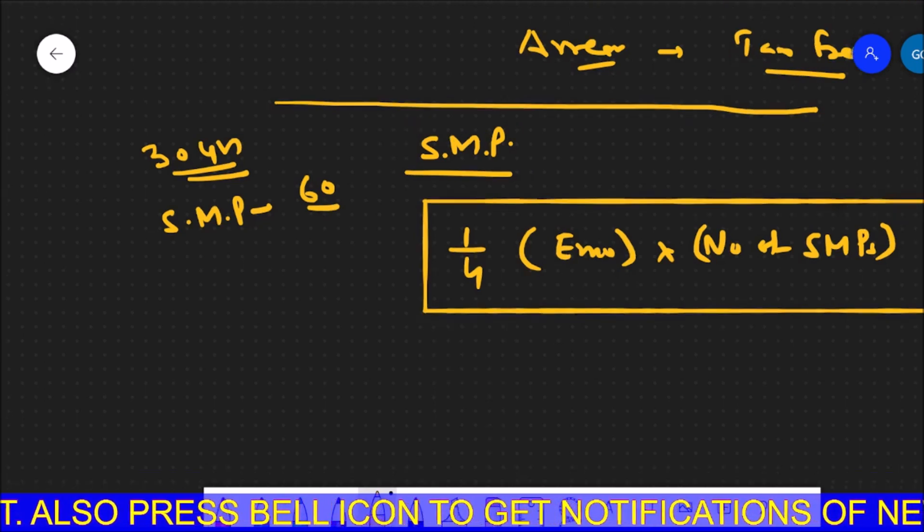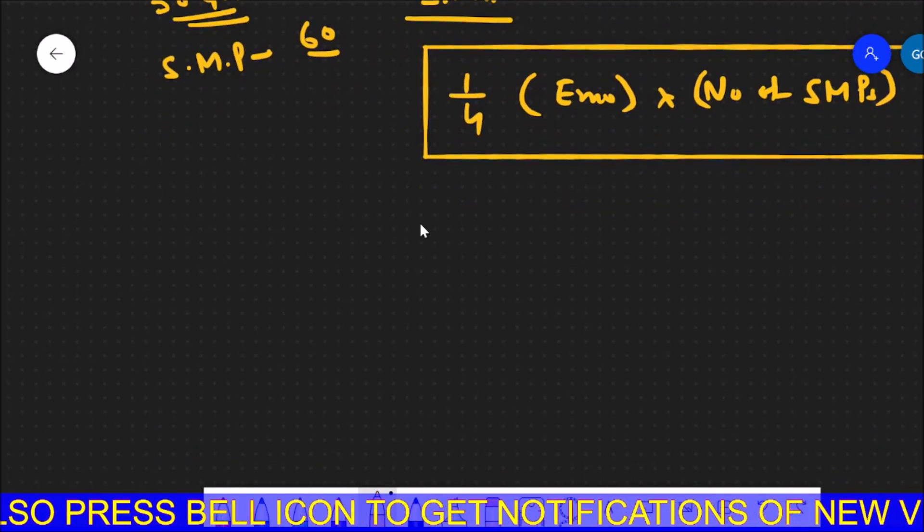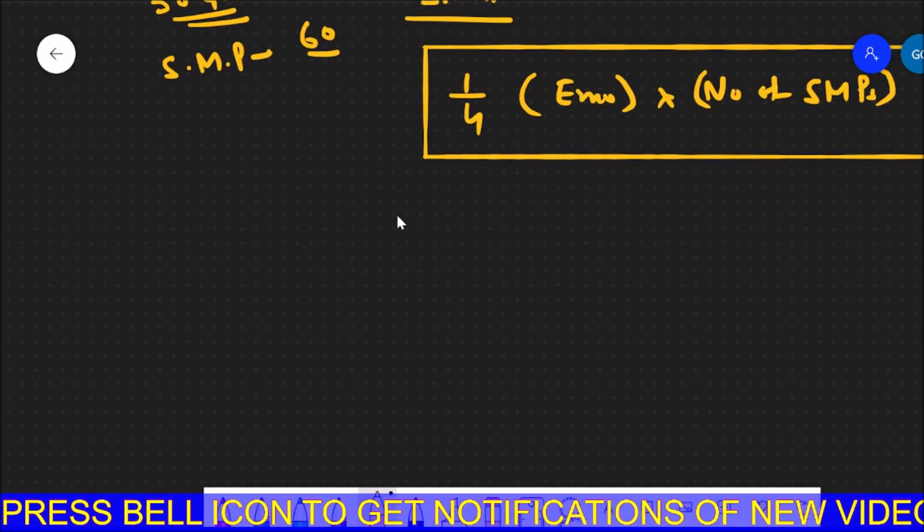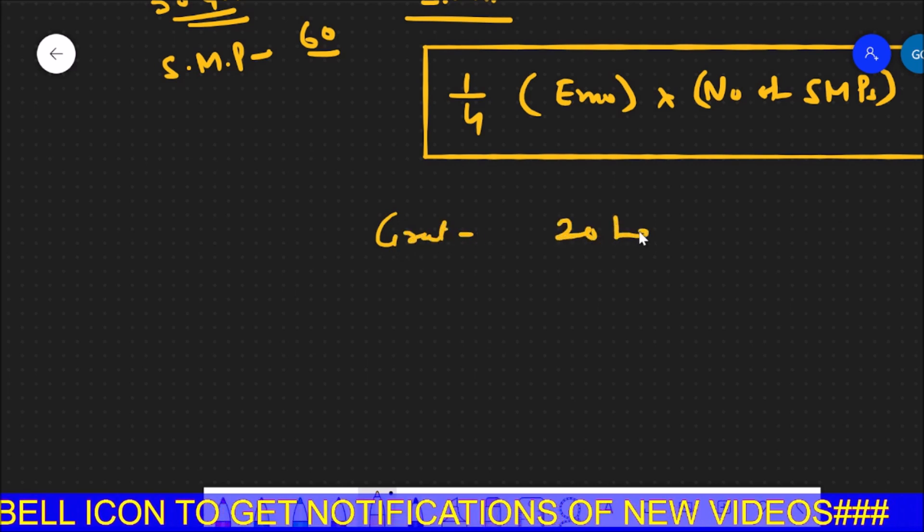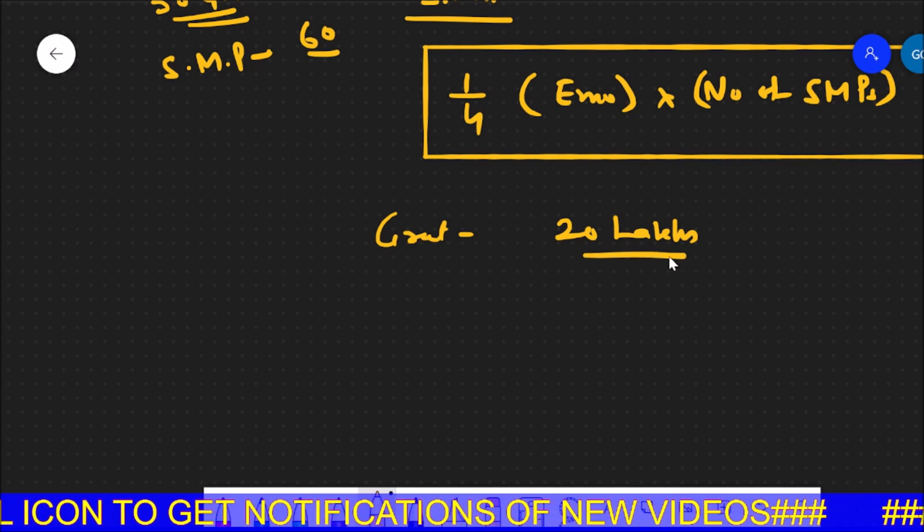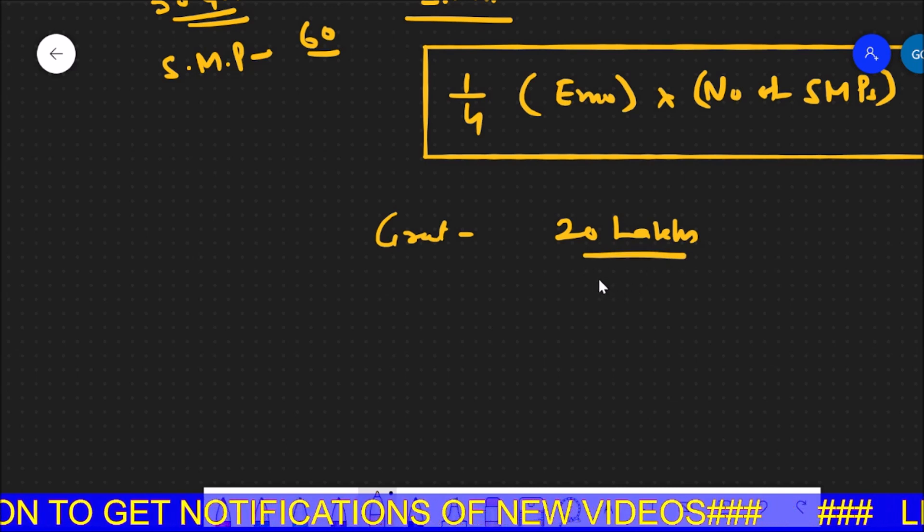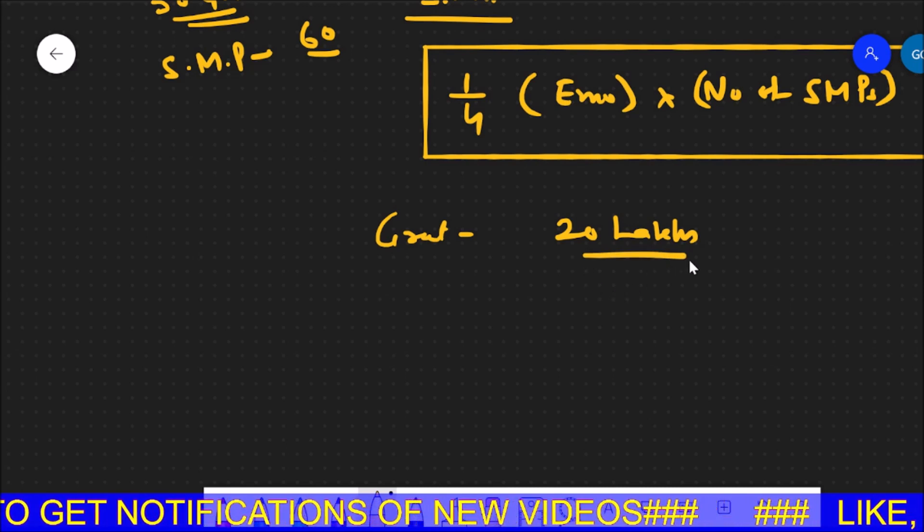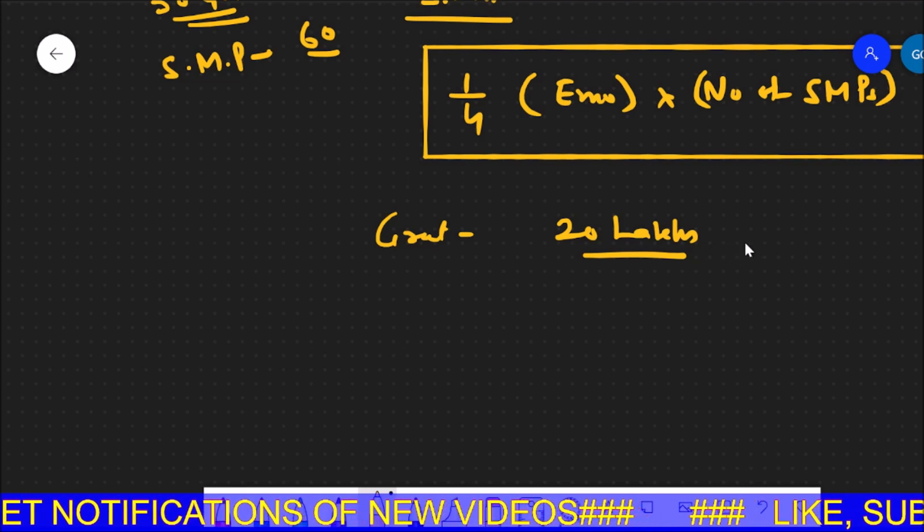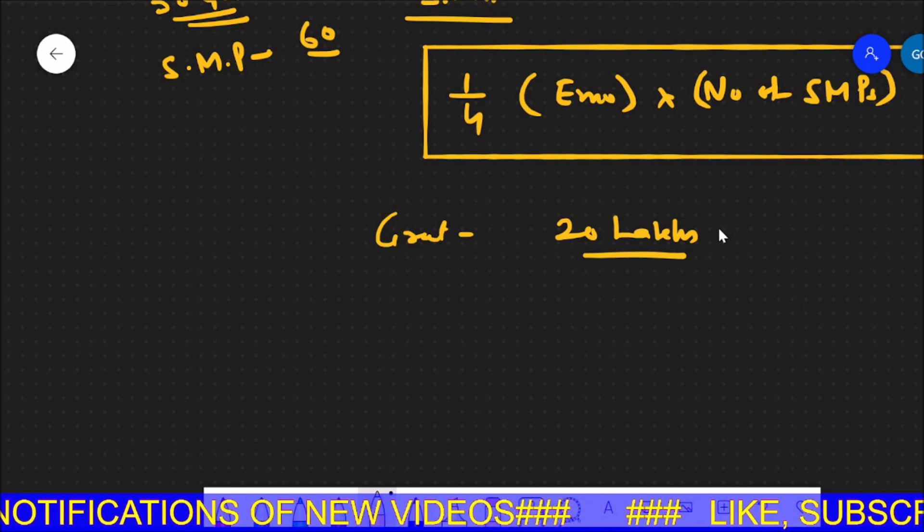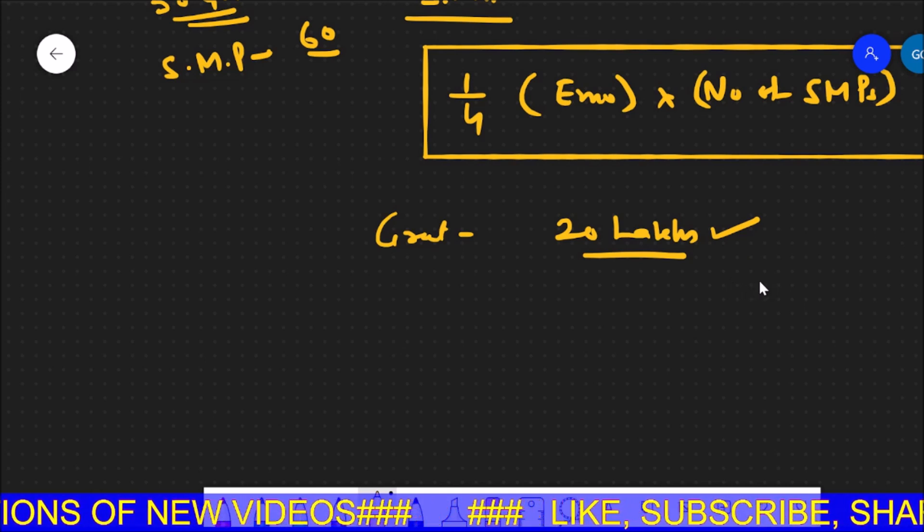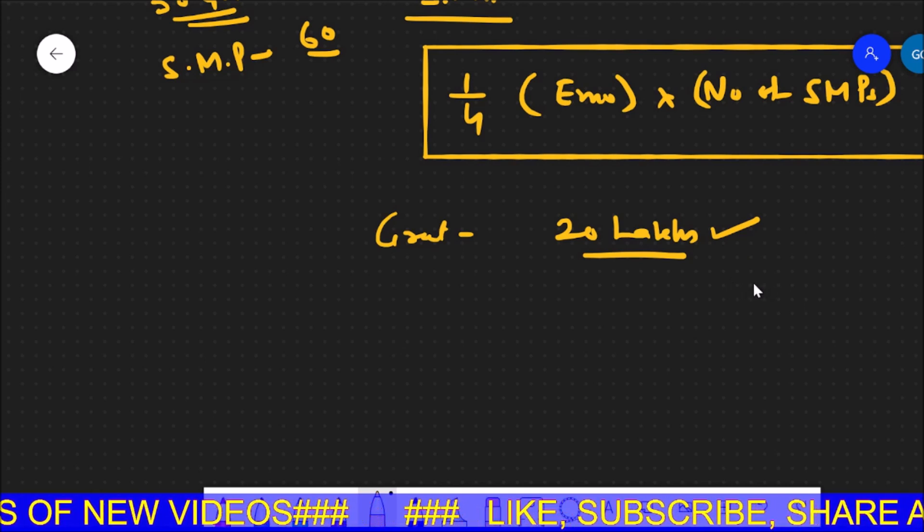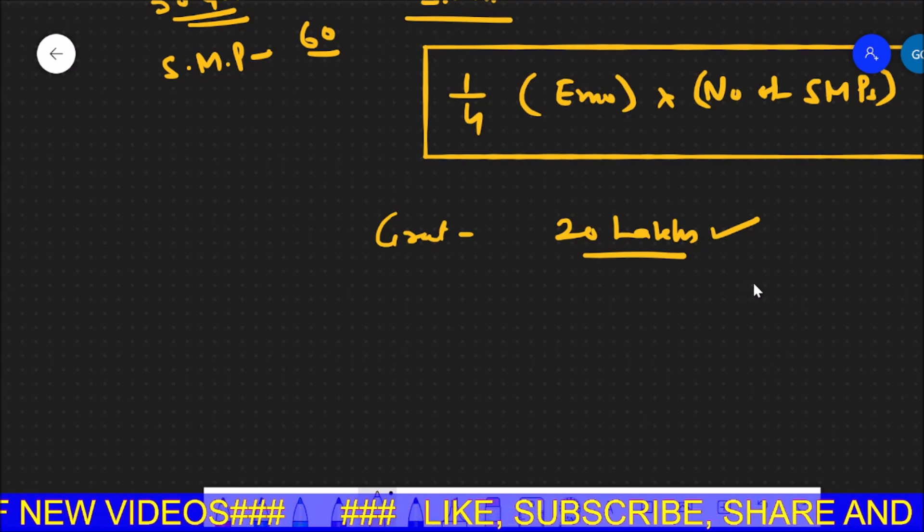The other thing that is important to note is that if someone's gratuity already crossed 20 lakhs, then there is nothing in this order for gratuity, because gratuity's maximum limit is 20 lakhs. But leave encashment will be different because there is no upper cap.